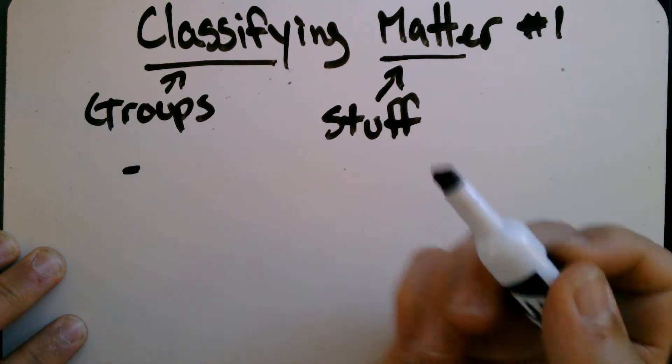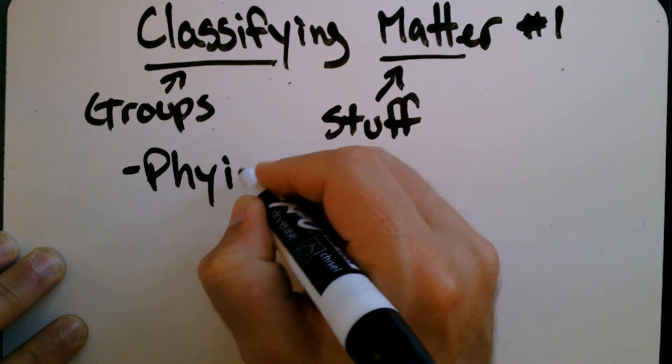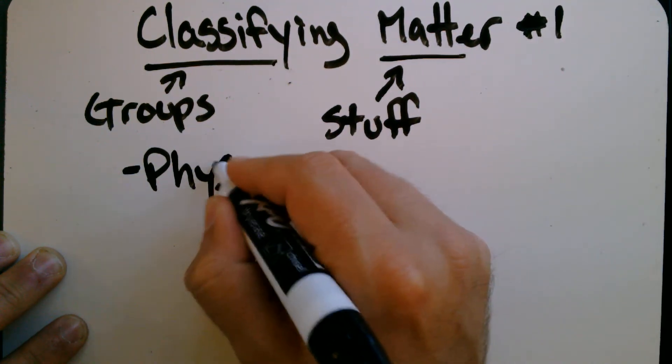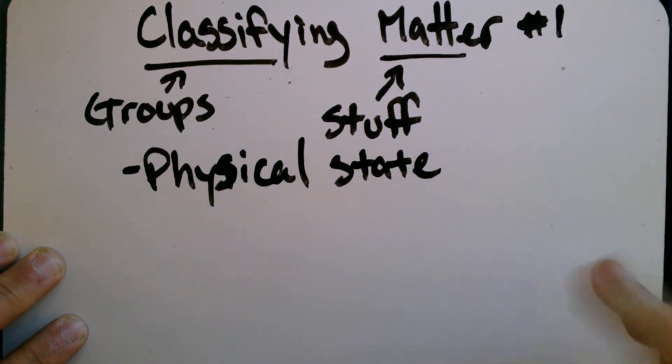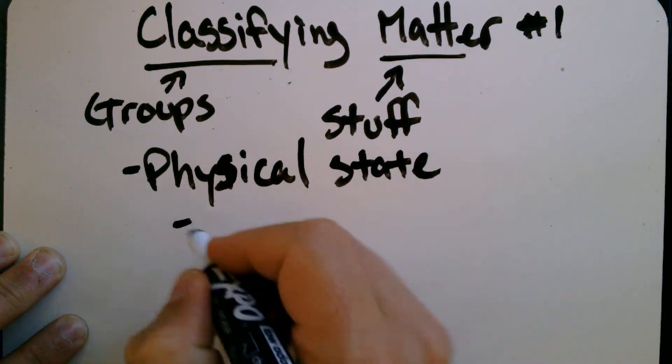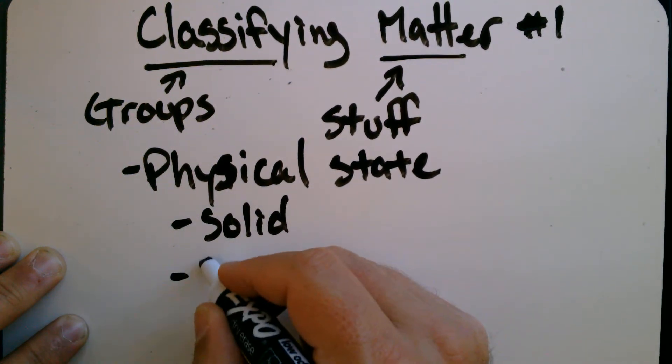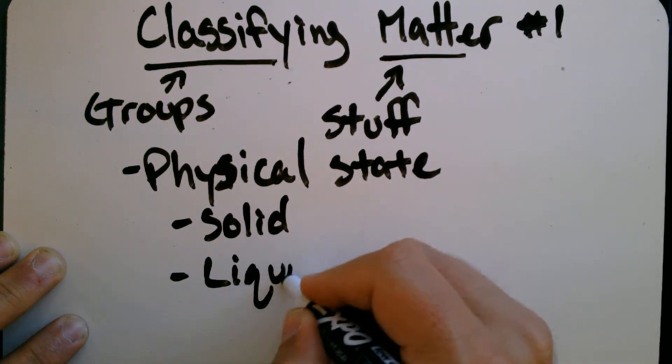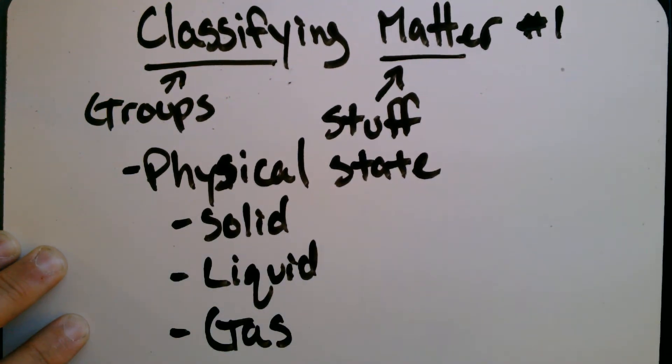The first way we're going to look at is physical, if I can spell physical, physical state. And this is just a really fancy way of saying, is it a solid, is it a liquid, or is it a gas? And that's really it, like that's really what physical state is.